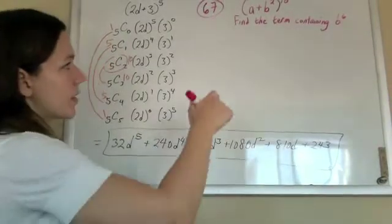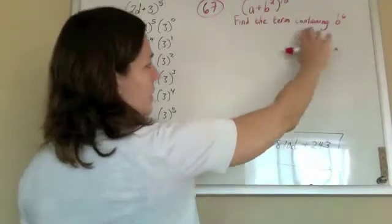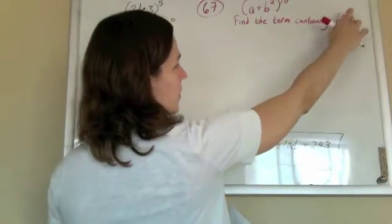So in problem 67, they have this and they want us to find only the term containing b to the 6.